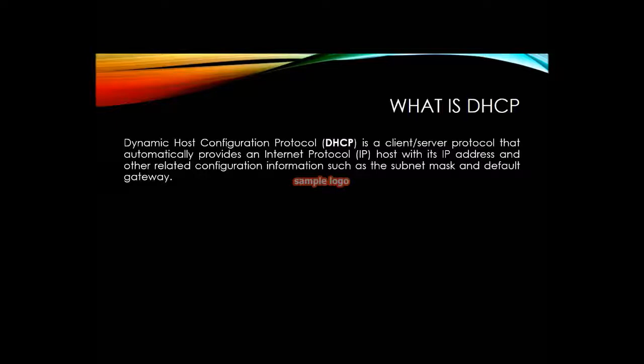DHCP also provides the subnet mask and the default gateway to the machine so that it can communicate with other hosts or devices connected to that network, or maybe in a different network — that is why a default gateway is also required. The DHCP client is the device getting the IP address from the router, and the router acts as the DHCP server.